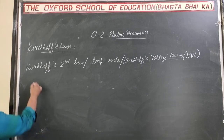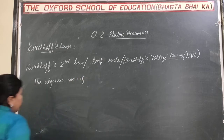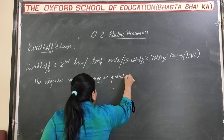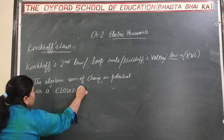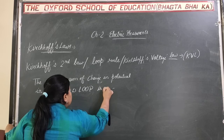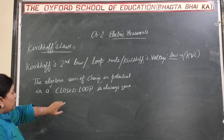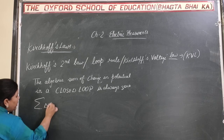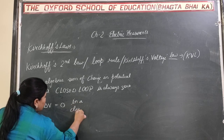According to this law, the algebraic sum of change in potential in any closed loop is always zero. We can write this as: the summation of delta V is always equal to zero, but the condition is that the loop must be closed.